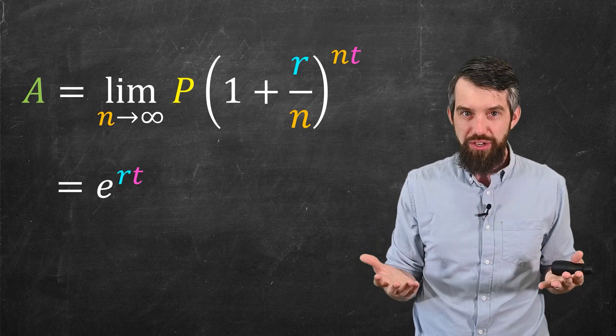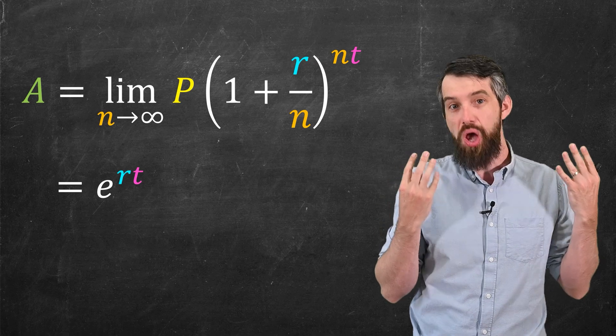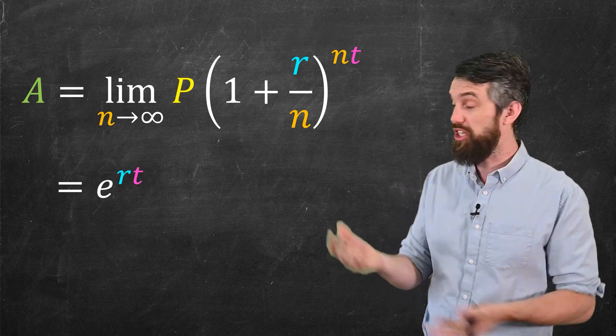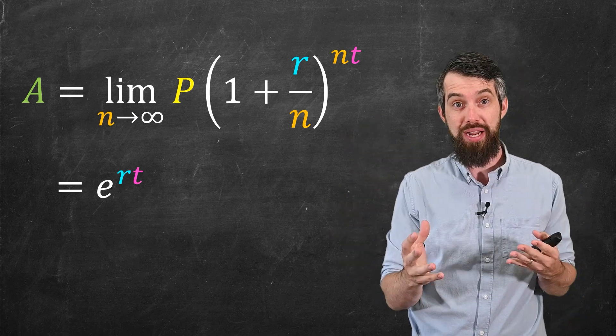it approaches this limiting value when this is the biggest number that you can have. And because of that fact, it's very common just to deal with all interest in terms of continuously compounded interest. If you know the interest rate r and you want to know how much you're going to have at any given t, just do e to the rt and that'll be your answer.